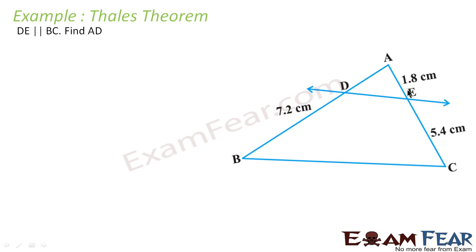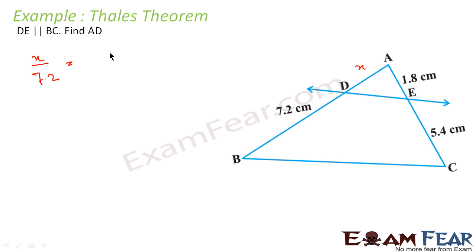Here DE is parallel to BC. We have to find AD. Let's assume AD to be x. Since DE is parallel to BC, we can apply the Basic Proportionality Theorem: x divided by BD, which is 7.2, is equal to AE, that is 1.8, divided by EC, that is 5.4.